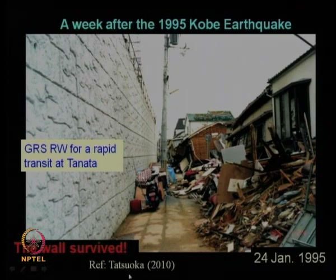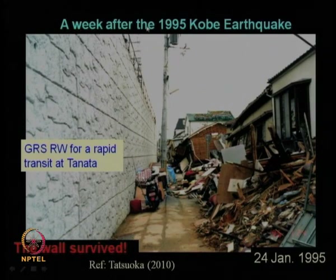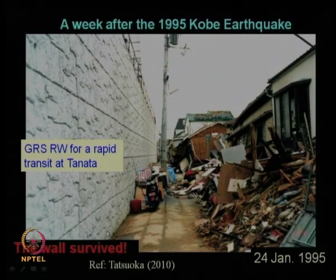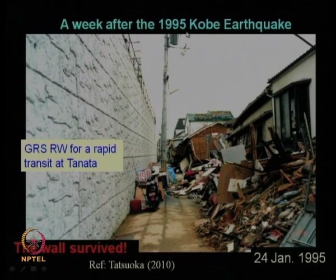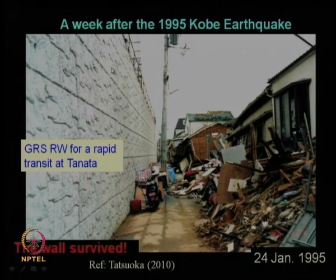As reported by Professor Tatsuoka in 2010, when the Kobe earthquake occurred in 1995 — one of the most damaging earthquakes in Japan before the 2011 Tohoku event — all buildings and structures collapsed. However, the geosynthetic reinforced soil wall supporting the rapid transit rail system in the Kobe region survived. This directly shows that geosynthetic reinforced soil walls perform even better than conventional gravity-type retaining walls under earthquake conditions.